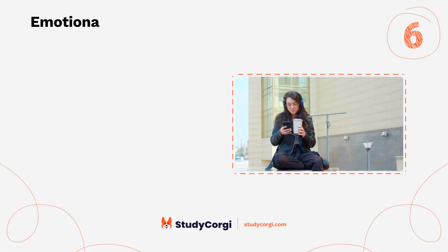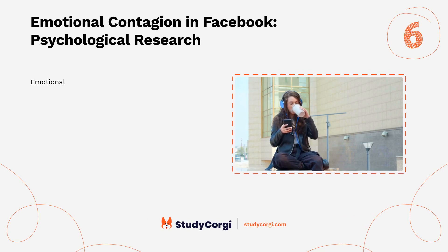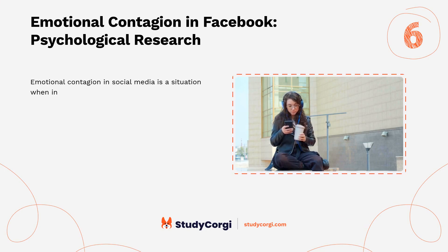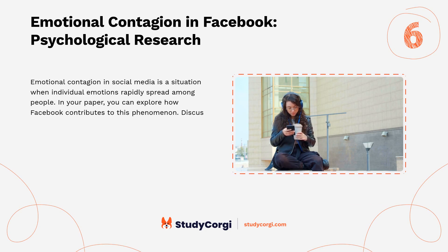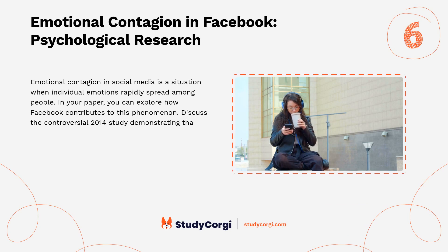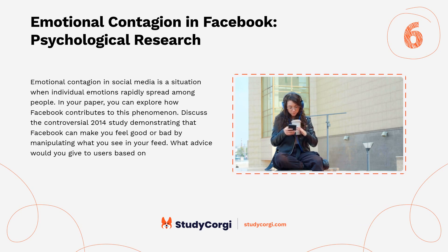Emotional contagion in Facebook psychological research. Emotional contagion in social media is a situation when individual emotions rapidly spread among people. In your paper you can explore how Facebook contributes to this phenomenon. Discuss the controversial 2014 study demonstrating that Facebook can make you feel good or bad by manipulating what you see in your feed. What advice would you give to users based on your findings?